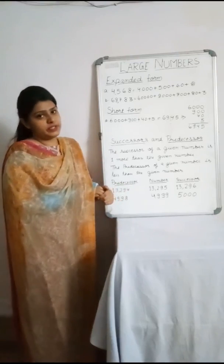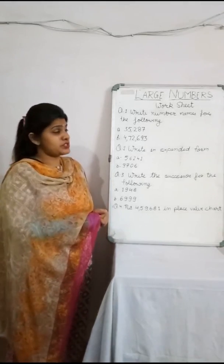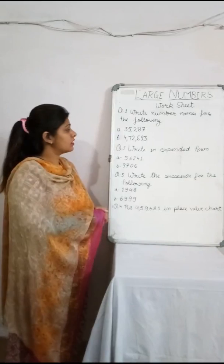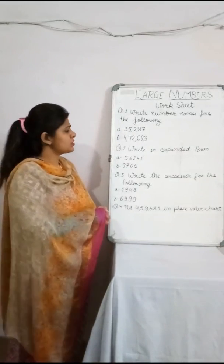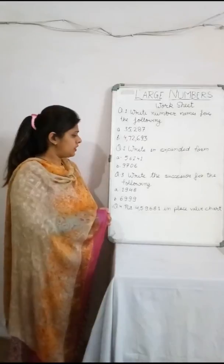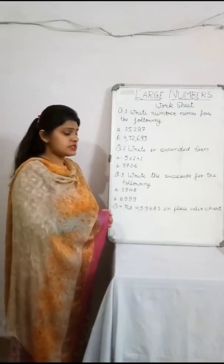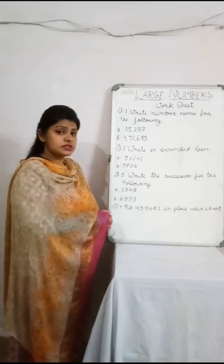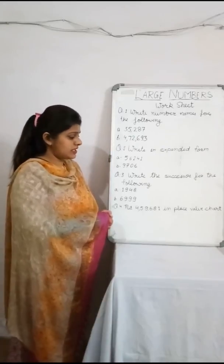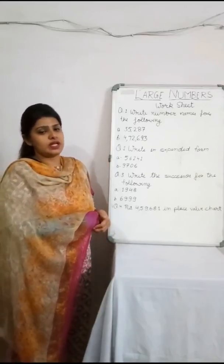Here we end today's topic. Thank you. This is our practice worksheet on large numbers for today. Question 1: Write number names for 35,287 and 4,72,693. Question 2: Write in expanded form — 56,241 and 9,706. Question 3: Write the successor of 1,948 and 6,999. Question 4: Put 4,59,681 in the place value chart. We'll meet in the next video on large numbers. Thank you.